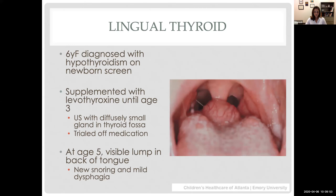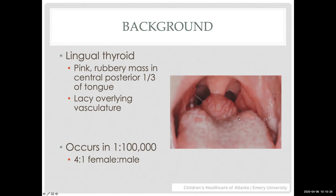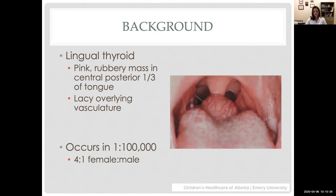After weaning her medications, around age five she presented with a visible lump in the back of her tongue. When she came to see me at age six, the reason was new onset snoring and mild dysphagia — she wasn't having trouble getting food down but complained it felt weird to swallow and was avoiding chewier foods like meats. A lingual thyroid looks like a rubbery mass, almost like a third tonsil, except it tends to have a lacy overlying vasculature.